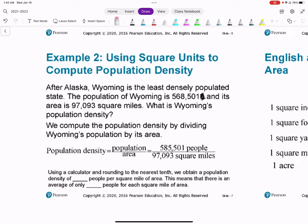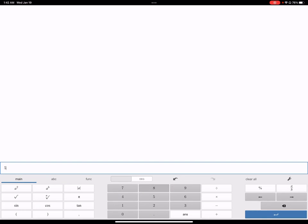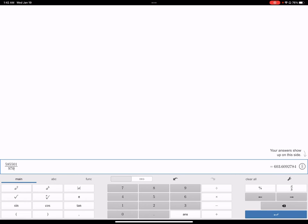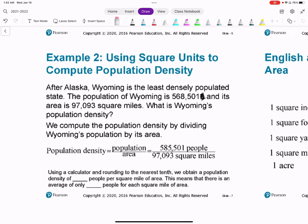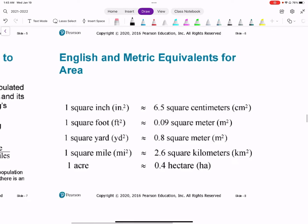So we have 585,000 divided by 97,093. So if you get out your calculator, 585,501 divided by 97,093. We get 6.03, and if we round that to one decimal it's 6.0. So there's 6.0 people per square mile of area. This means there is an average of only 6 people for each square mile area.